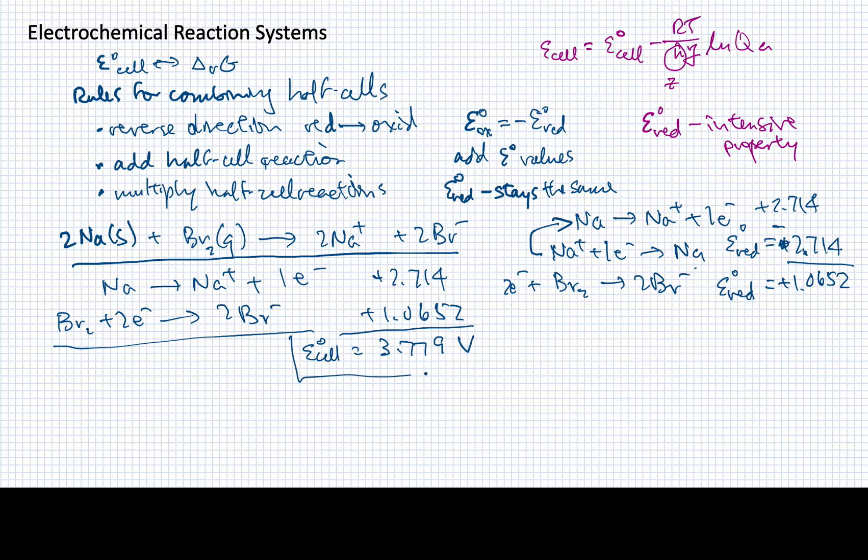So this would represent the standard cell potential for the reaction that I'm interested in, and I could then use this directly to determine what delta G might be in this case. Delta G for the reaction is going to be minus ZF times the cell potential. In this case, Z is going to be 2 electrons, because I have to multiply this by 2, but I don't change this value when I multiply by 2. So when I do that, I'll end up with 2 here for Z, and my normal value for the Faraday constant, and 3.779 here for the cell potential. And the ultimate result is that I'll find that G is equal to minus 729 kilojoules per mole.